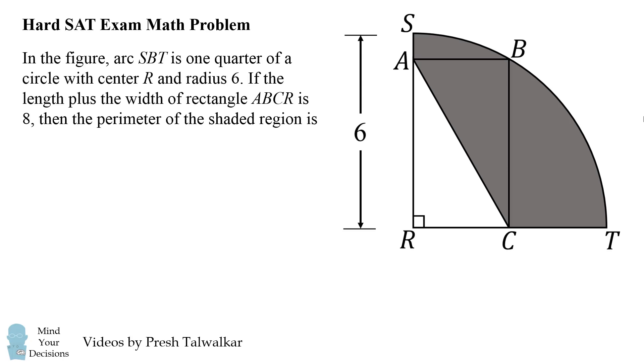In the figure, arc SBT is one-quarter of a circle with center R and radius 6. If the length plus width of rectangle ABCR is 8, then the perimeter of the shaded region is which of the following choices?